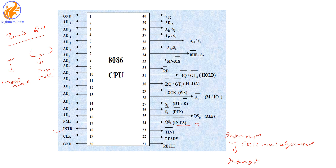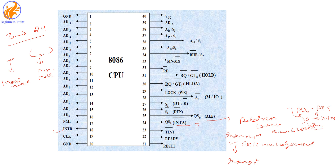Next is the ALE pin in the bracket. ALE stands for Address Latch Enable. This pin is used to differentiate between address and data available on pins AD0 to AD15. When ALE is zero, it indicates that whatever comes on AD0 to AD15 is data. When ALE is one, the system treats the value on AD0 to AD15 as an address for the next execution.